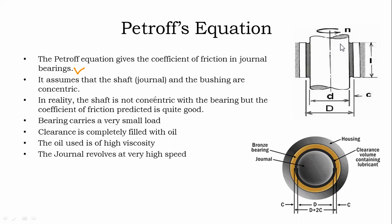Let's look at the setup. The shaft will be there, the shaft will be surrounded by the journal. On the journal we'll have the lubricating oil, as well as the bearing, and a casing will be there. So the parts are: shaft, journal, bearing, and housing — these three rings indicate the arrangement.